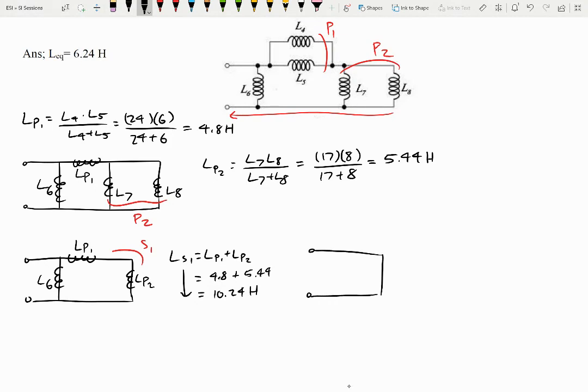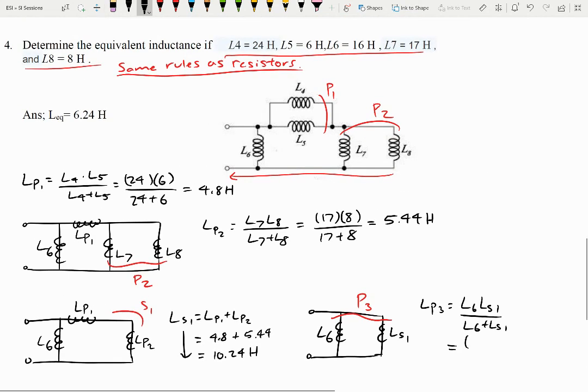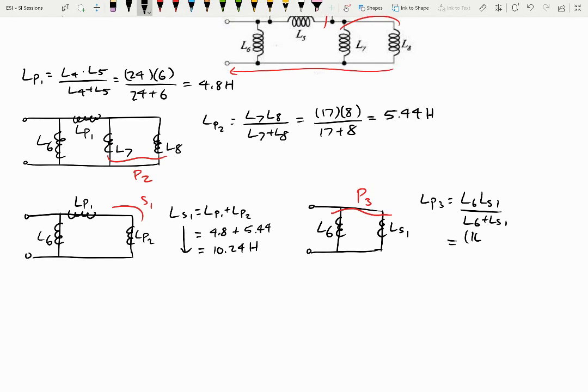Then finally, we'll have L6, L series one, and we see that these two are in parallel. So we'll just go L parallel three, L6 times L series one, L6 plus L series one, where six was 16. So 16, and then L series one, we said it's 10.24 over 16 plus 10.24. So L parallel three gives us 6.24 henrys.